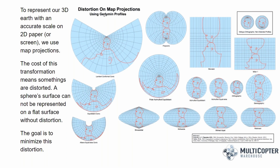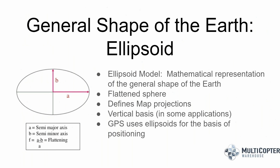The world is not a sphere — it's not flat either. The general shape of the earth is called an ellipsoid, a mathematical representation of the earth's shape that is a flattened sphere, with a larger major axis along the equator and a shorter minor axis at the pole. More precisely, the earth is an oblate spheroid because it's a little wider than it is tall. Because of this shape, it's actually difficult to find the center of the earth, which is why we use a mathematical model called the ellipsoid.